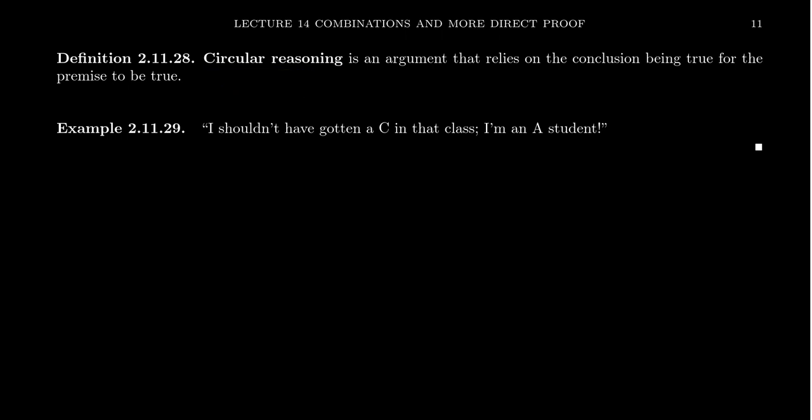This is an argument that relies on the conclusion being true for the premise to be true. That is to say, somewhere you're assuming, you're assuming the conclusion to be true or something logically equivalent to it and then use that to argue why it's true. Basically, you have the proof that P implies P. P implies P. Well, sure.